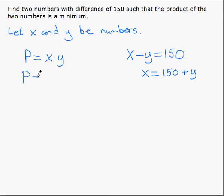So the product is going to be 150 plus y multiplied by y. Now, as with any max-min problem, once we get a primary equation with one variable, we take the derivative, set it equal to zero and solve.